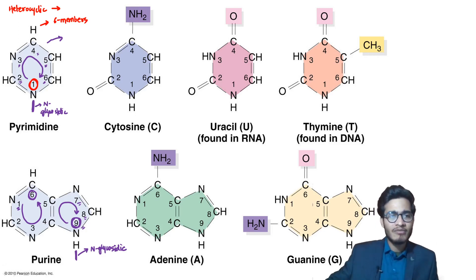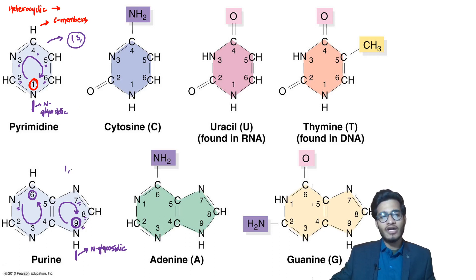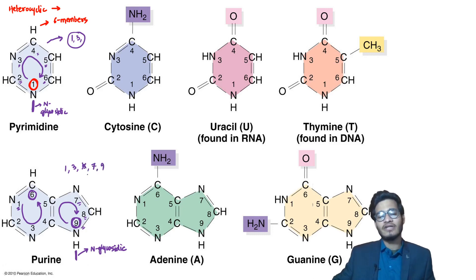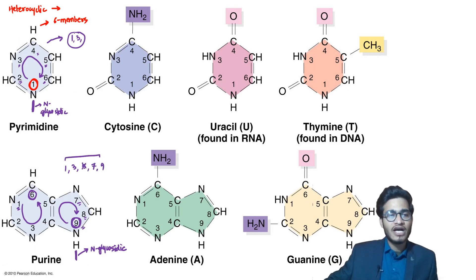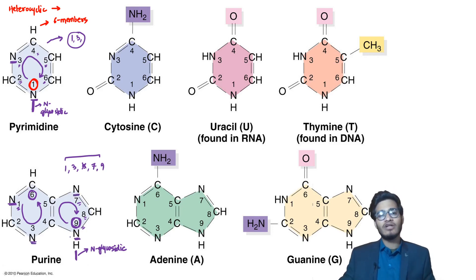For the nine-membered purine ring: position 1 is odd — nitrogen; position 3 is odd — nitrogen; position 5 is excluded; position 7 — nitrogen; position 9 — nitrogen. So nitrogen is at positions 1, 3, 7, 9 for purines. For pyrimidines: nitrogen at positions 1 and 3 only. All confirmed: 1 — confirmed, 3 — confirmed, 7 — confirmed, 9 — confirmed. All set.